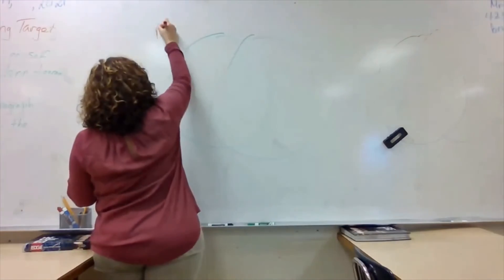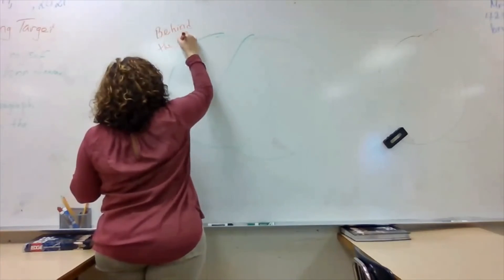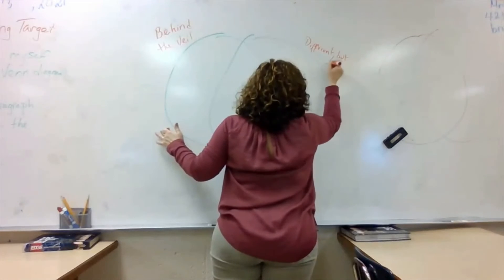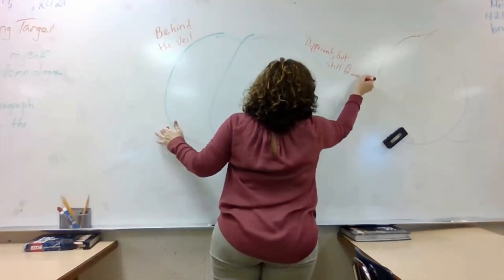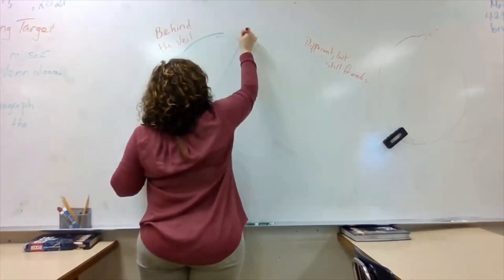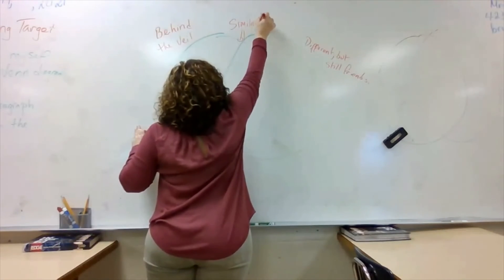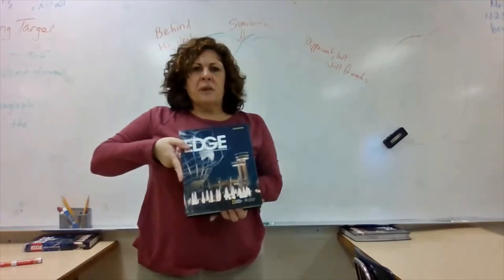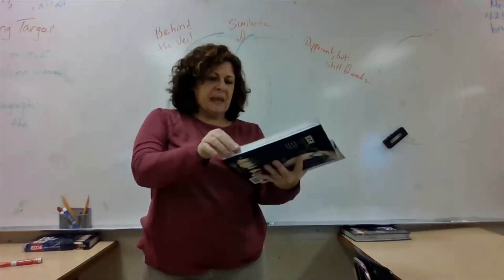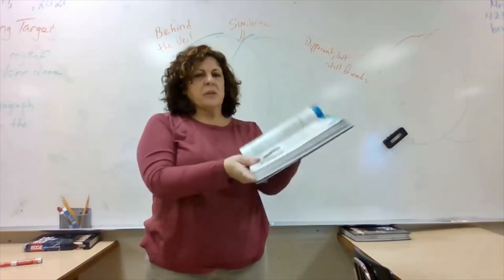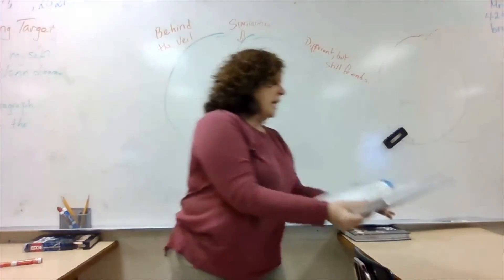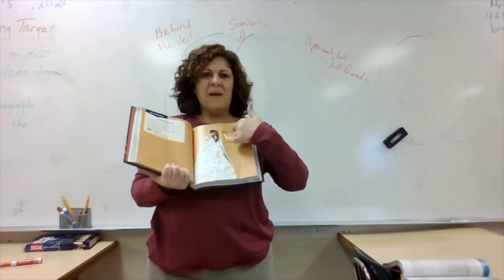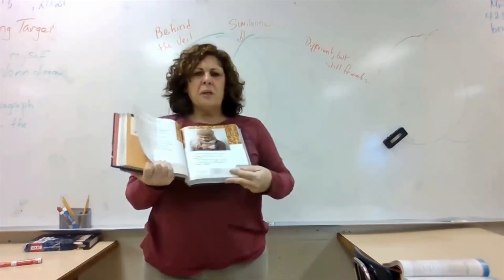Here on the left side of the Venn diagram I'll write 'Behind the Veil,' and on the right side 'Different But Still Friends.' In the center, we write the similarities. I'm opening my AGE Fundamentals book to page 187, where the first story is located, and page 193, where 'Behind the Veil' begins — the story actually starts on page 194.